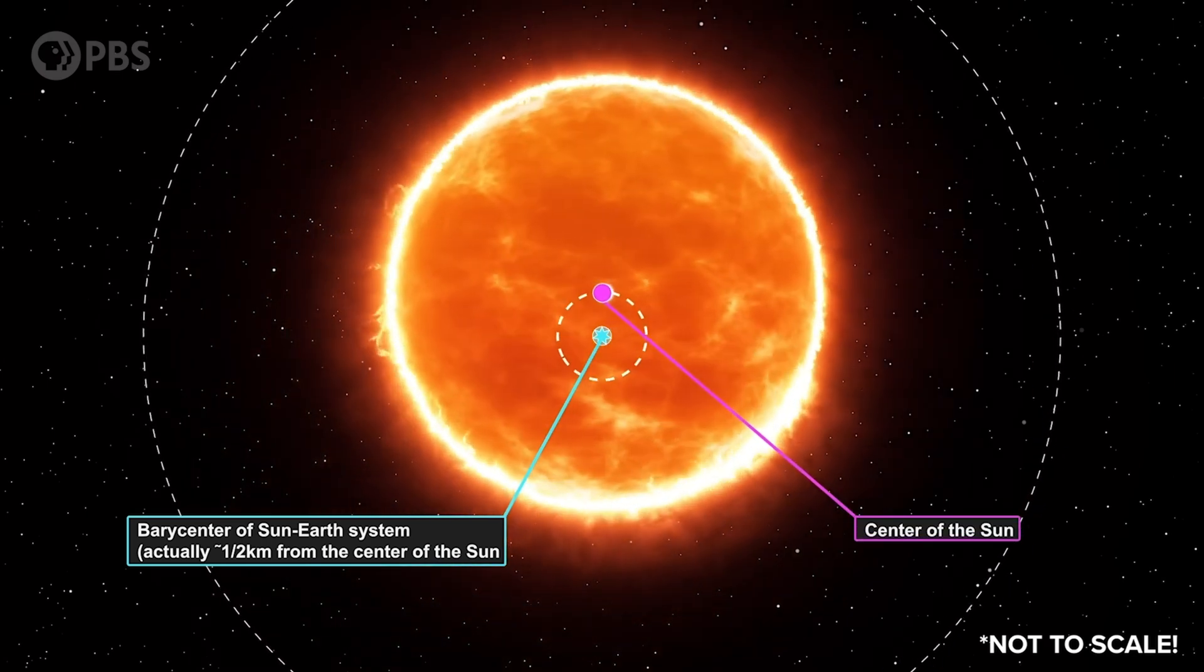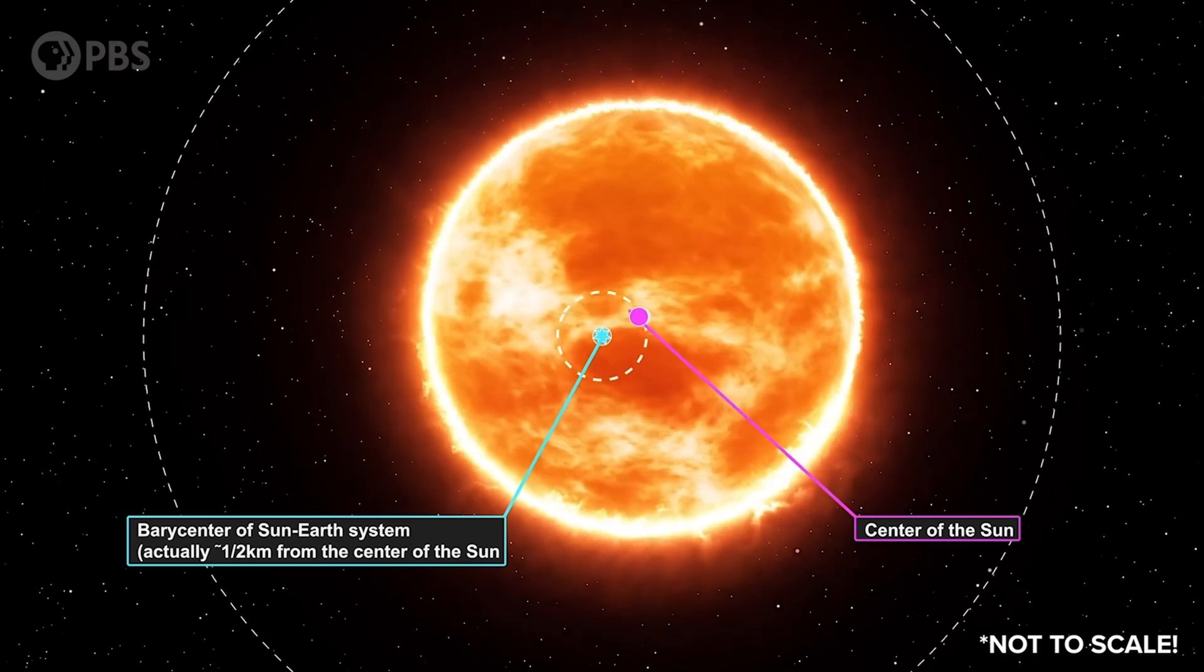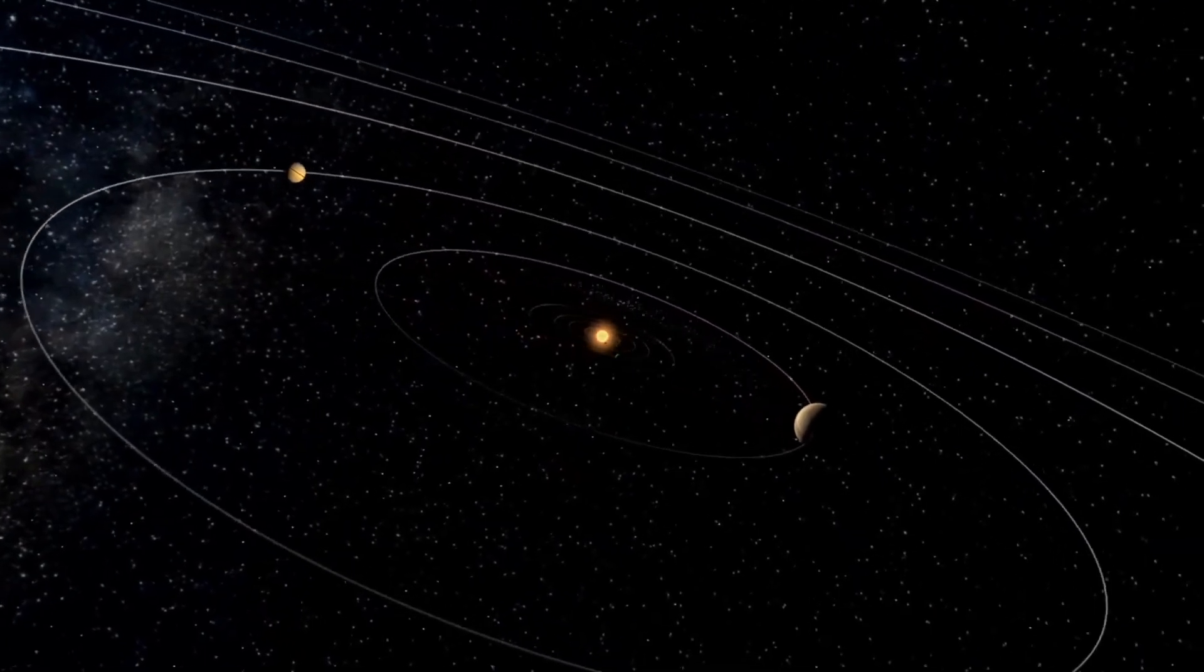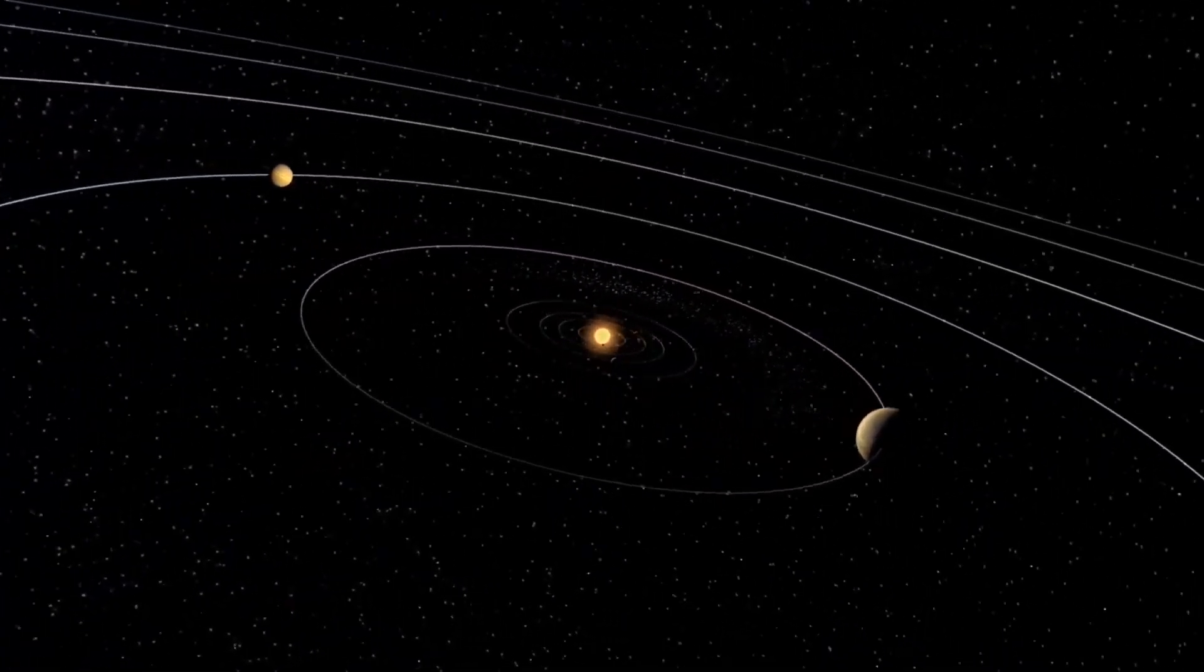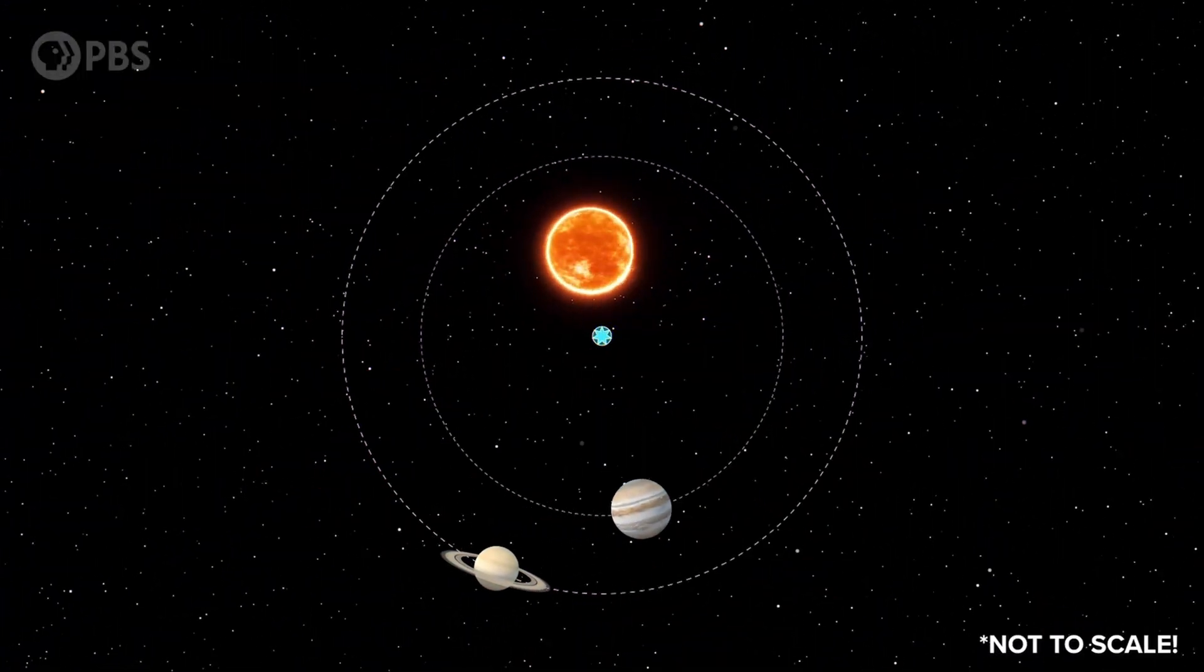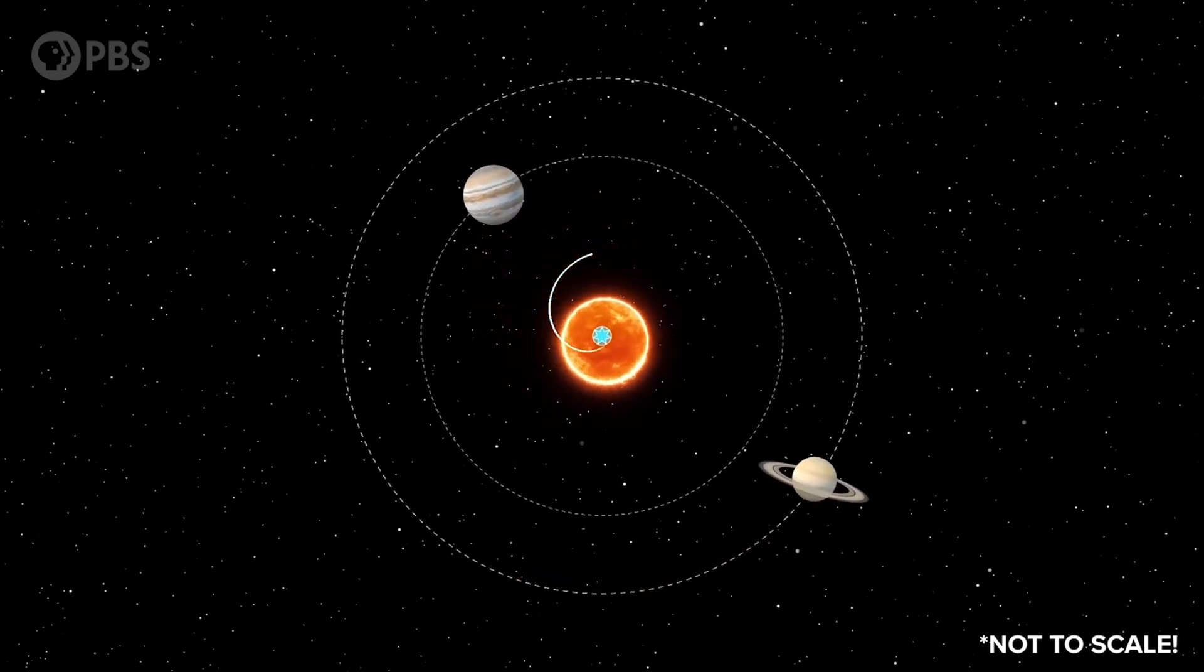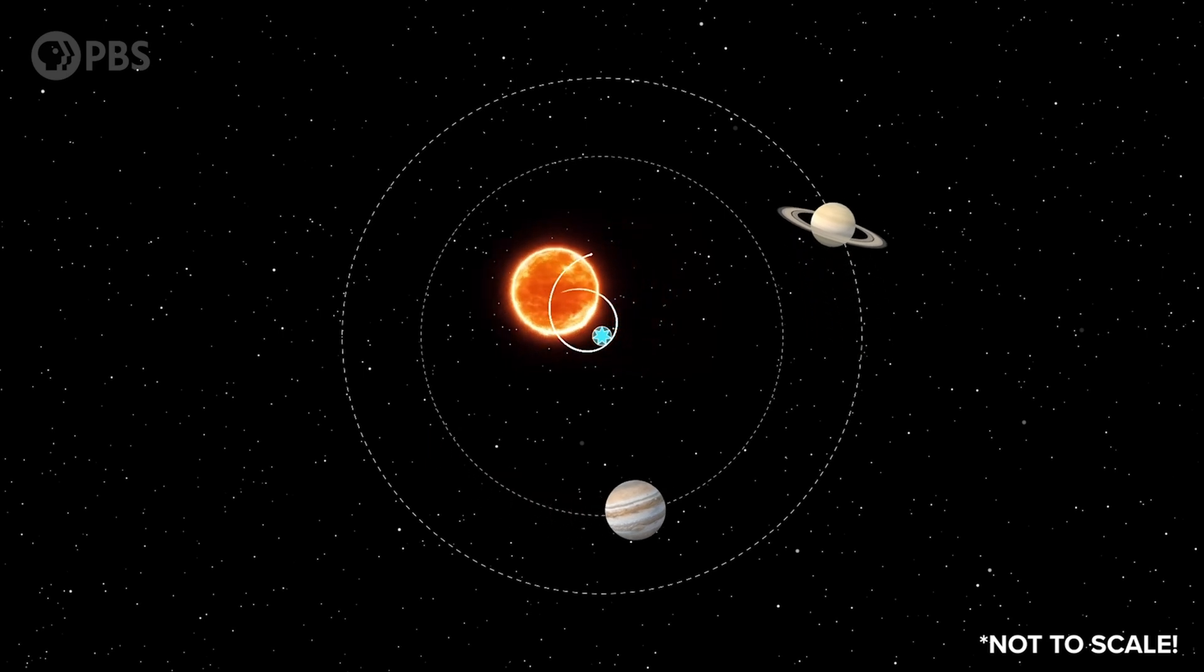From this viewpoint, the Sun performs a complex dance, mainly influenced by the gravitational pulls of massive planets like Jupiter and Saturn. The location of the solar system's Barycenter can vary, sometimes even extending beyond the Sun's surface, particularly when these giant planets align in a particular way.